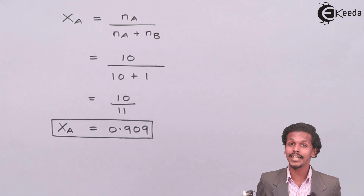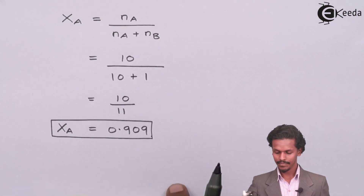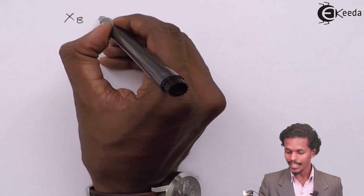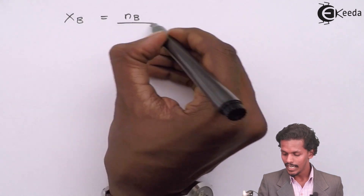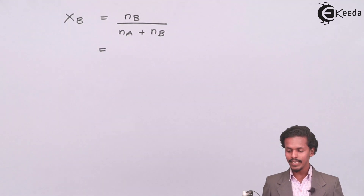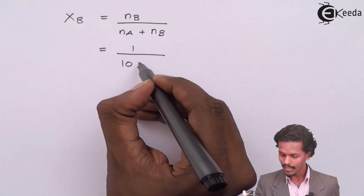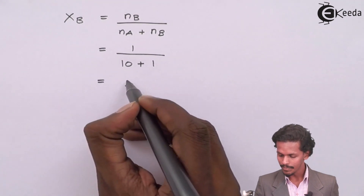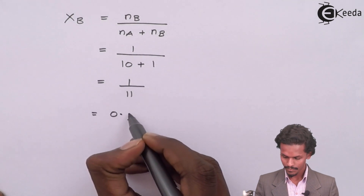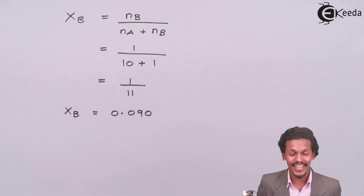Now we calculate the mole fraction of solute. The formula is X_B = N_B divided by (N_A + N_B). We have N_B = 1 and N_A = 10, so X_B = 1 divided by (10 + 1) = 1/11 = 0.090. Again, the unit is unitless since mole fraction is a ratio.